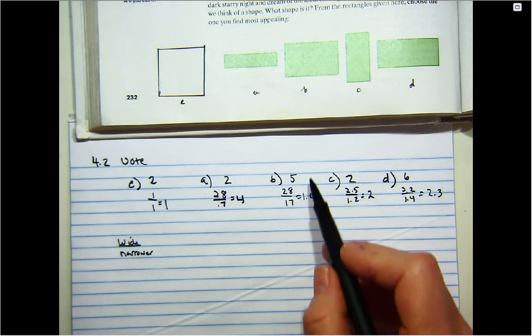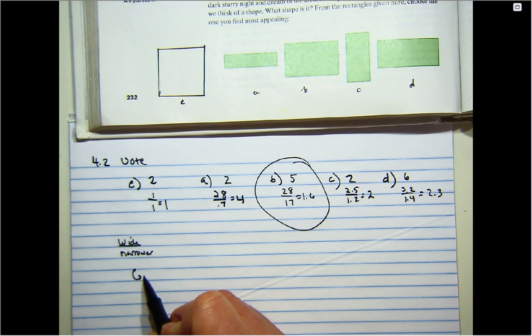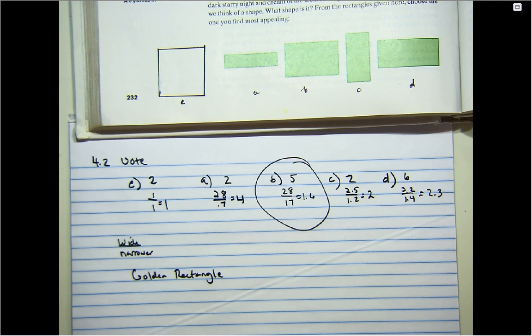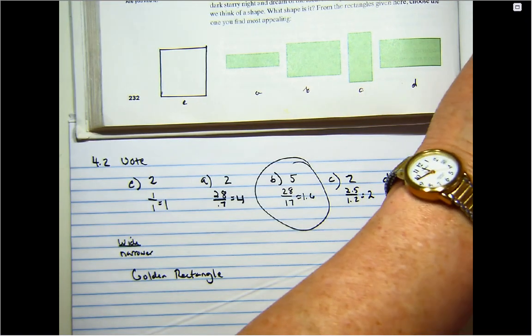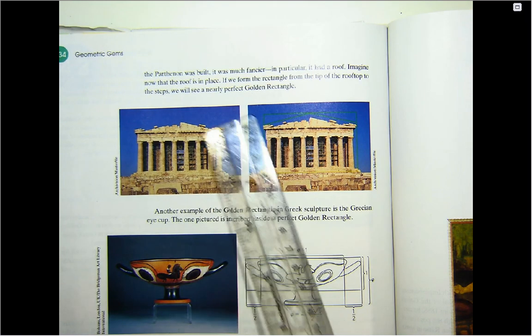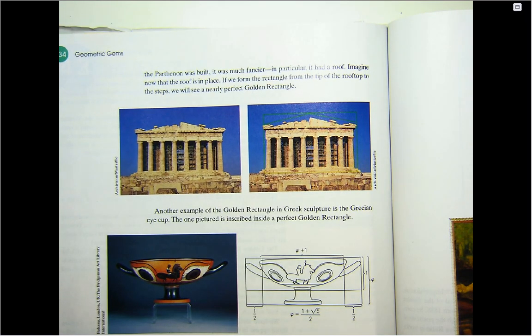It turns out that rectangle B is called the golden rectangle. Has anybody heard of the golden rectangle before? In art, there are a lot of artists who feel this ratio of long side to short side coming out to 1.6 is the most beautiful of all rectangles. Again, it's subjective and you can debate it — but we'll see a lot of art today that has this golden ratio in it. In the Parthenon, for example, you can find the golden rectangle: the ratio of long side to short side is 1.6.